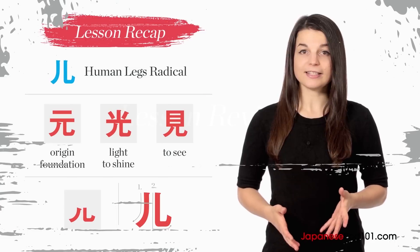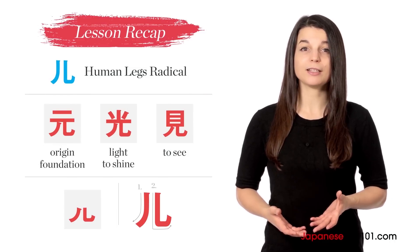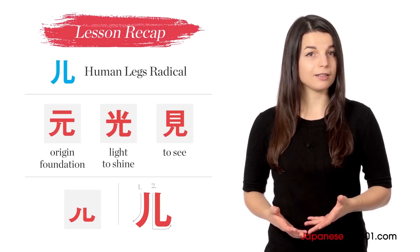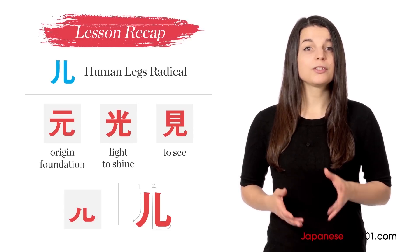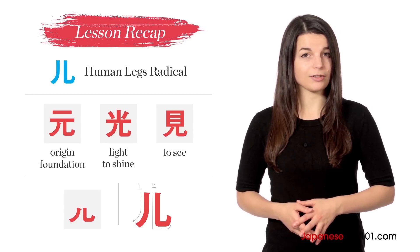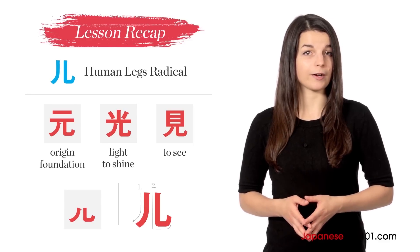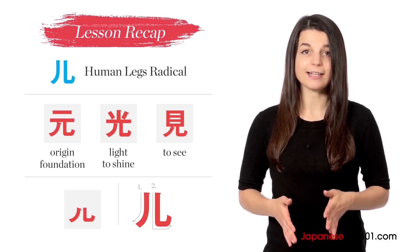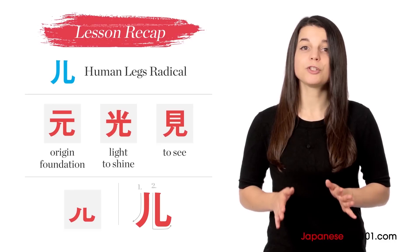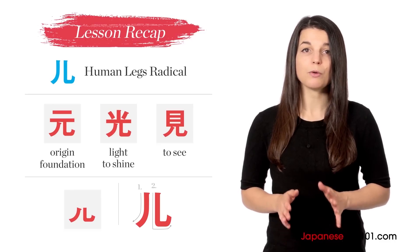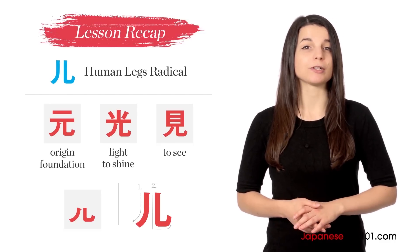In this lesson you learned about the human legs radical. The idea behind the human legs radical is support. This radical isn't a kanji character on its own, so you'll only see it in other kanji characters, such as the foundation, shine, and see kanji characters that you learned in this lesson. You'll always find this radical in the bottom position, and it's written with two strokes — one curved stroke, and one that flattens out and flicks upwards slightly.